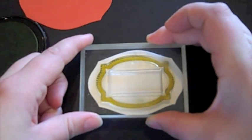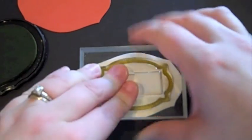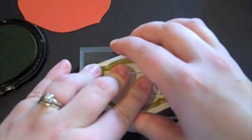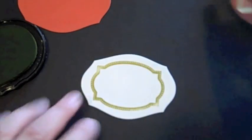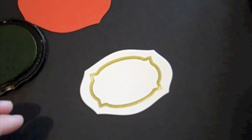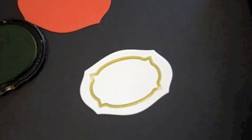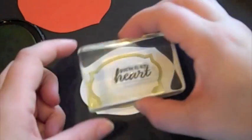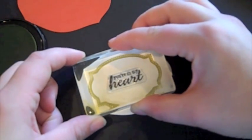I'm sorry, Matte Stack 1. I'm going to stamp this frame right in the middle, just like that. And then I've got a sentiment from the same set, it's "in my heart," and I'm going to add that in black in the center.